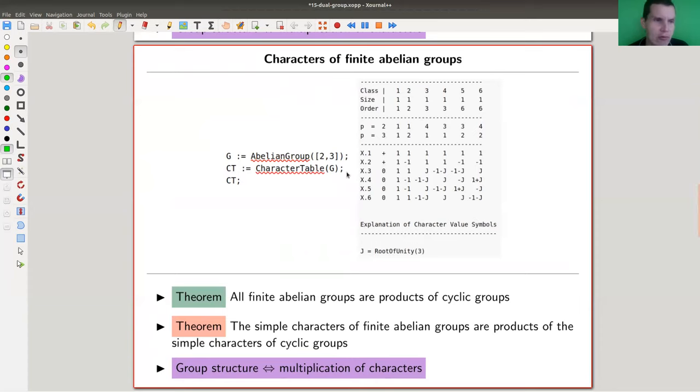And you can do really just the same for all abelian groups. So all finite abelian groups are just products of cyclic groups. So here my group would be Z2 cross Z3, and you can easily use that in magma as well. Here's the table that you get.